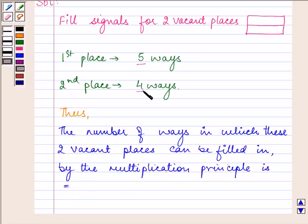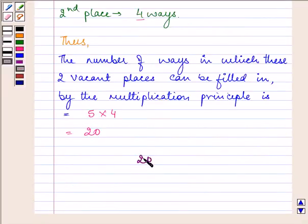5 multiplied by 4, that is 20. So the number of different signals which can be generated if each signal requires use of 2 flags one below the other, the required answer is 20.